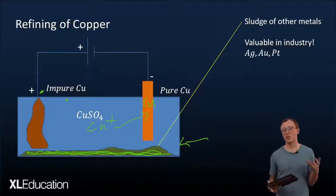And this sludge is actually quite valuable because it often contains things like silver, gold, and platinum, which are very expensive metals.